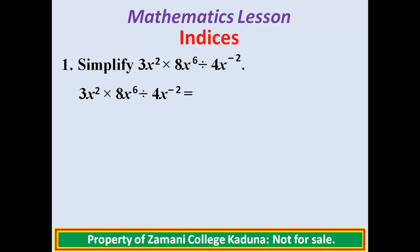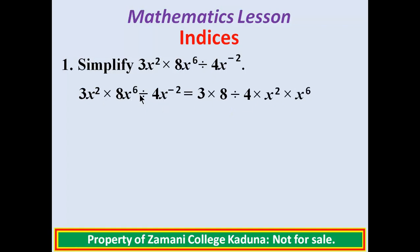In this problem, we shall collect the coefficients and then the x terms. The first coefficient is 3, the second is 8, so we multiply 3 times 8. The third coefficient is 4, so we divide by 4. Then we collect the variable x: x raised to power 2 times x raised to power 6, divided by x raised to power negative 2.